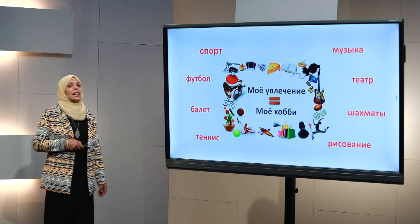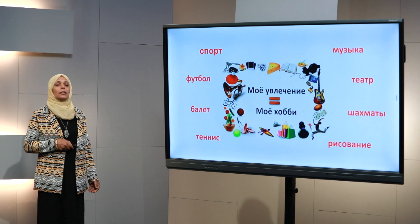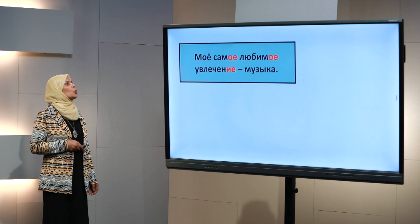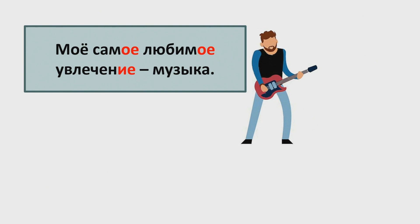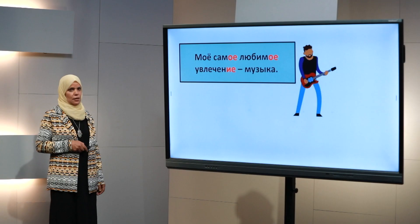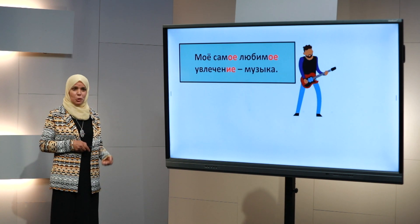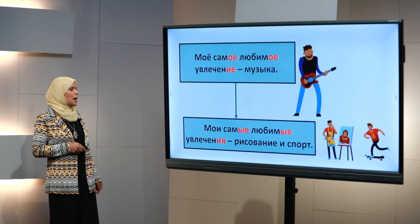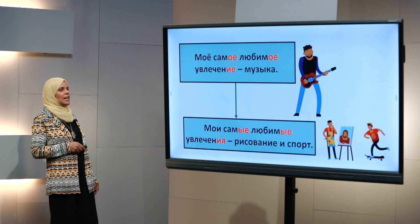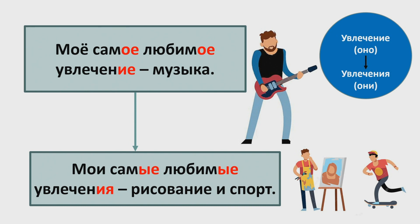Если у меня разные увлечения, но я люблю одно больше других, в таком случае я могу сказать: «моё самое любимое увлечение — это музыка». А если я люблю и рисование, и спорт, тогда можно сказать: «мои самые любимые увлечения — это рисование и спорт». «Увлечение» — оно, «увлечения» — они.